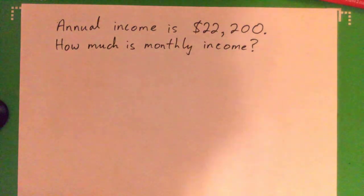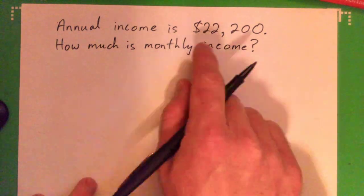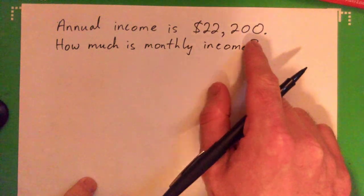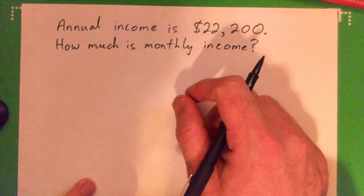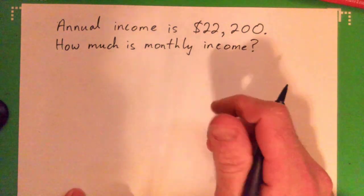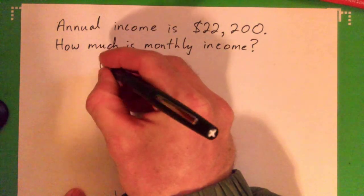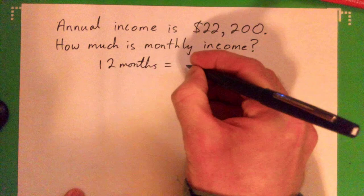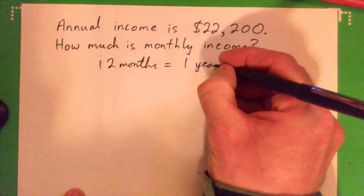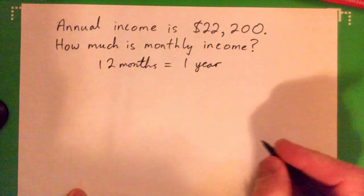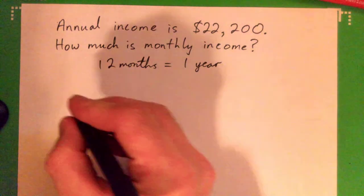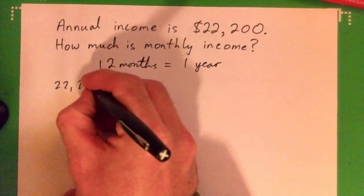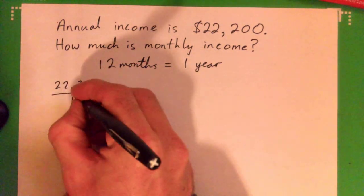If annual income is $22,200 for an individual or a family, how much is the monthly income? Remember, we've got 12 months in a year. 12 months is the same thing as one year in time. So we can do this number, the annual income, divided by 12 to get the monthly income.